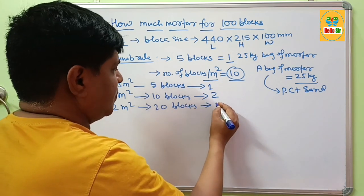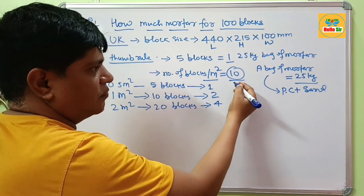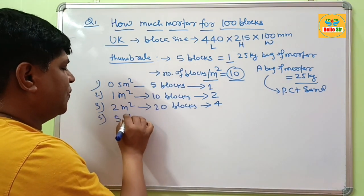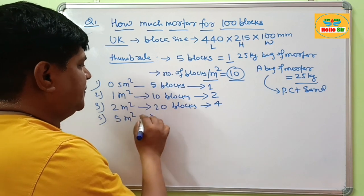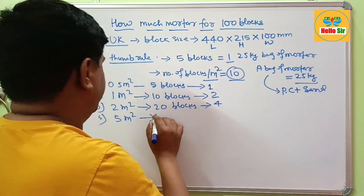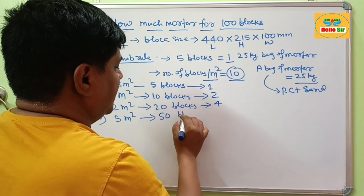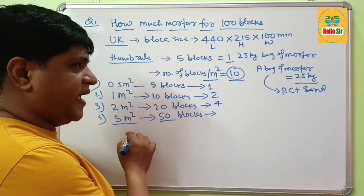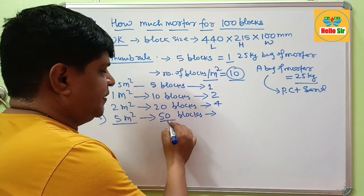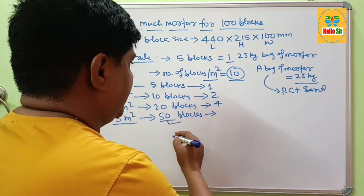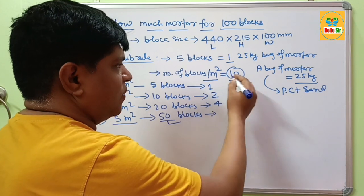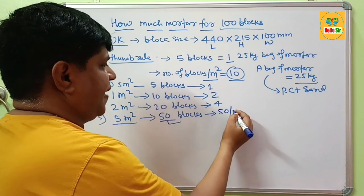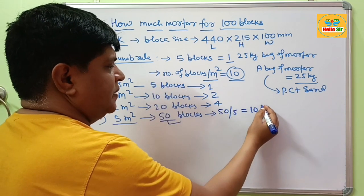For 5 square meter area, you need about 50 blocks. If your block wall area is 5 square meters and it needs about 50 blocks, to calculate the required mortar bags, you simply divide 50 by 5, which gives about 10 bags.